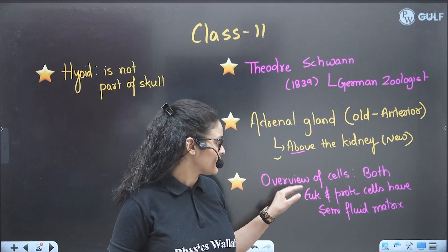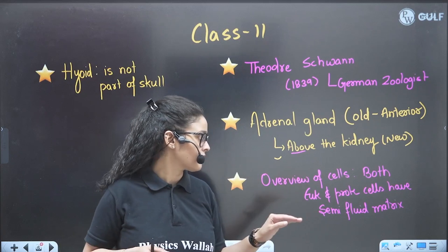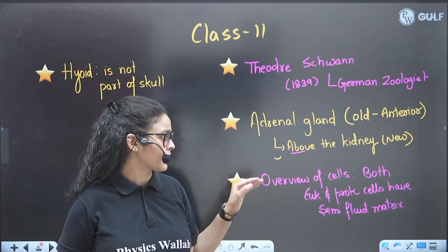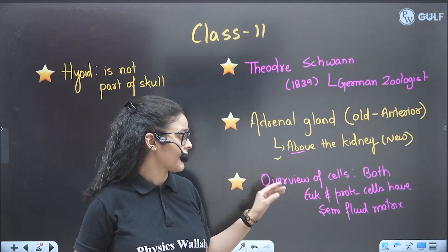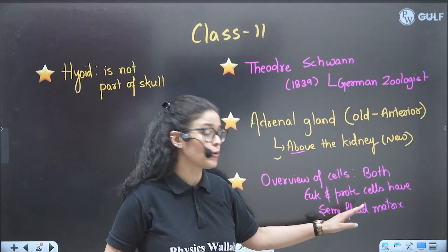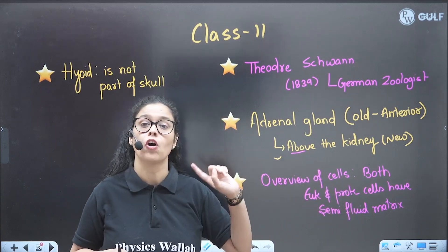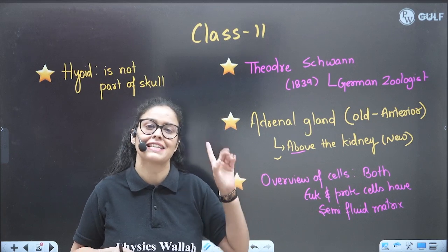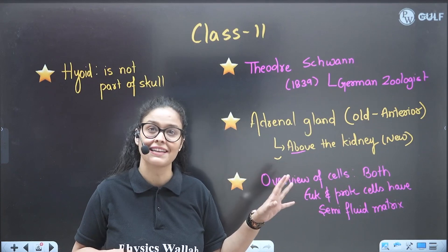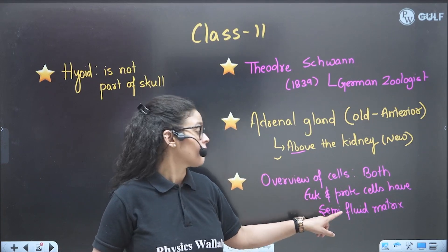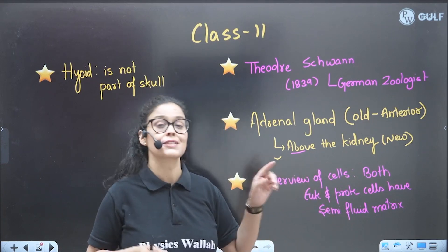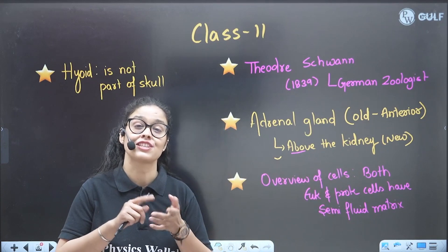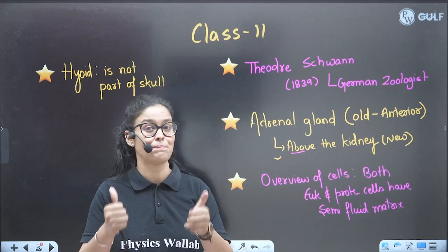In the cell chapter overview of the cell, both eukaryotes and prokaryotes have a semi-fluid matrix, not a fluid matrix. In old NCRT they mentioned it's a fluid matrix, but now they have changed it to semi-fluid.